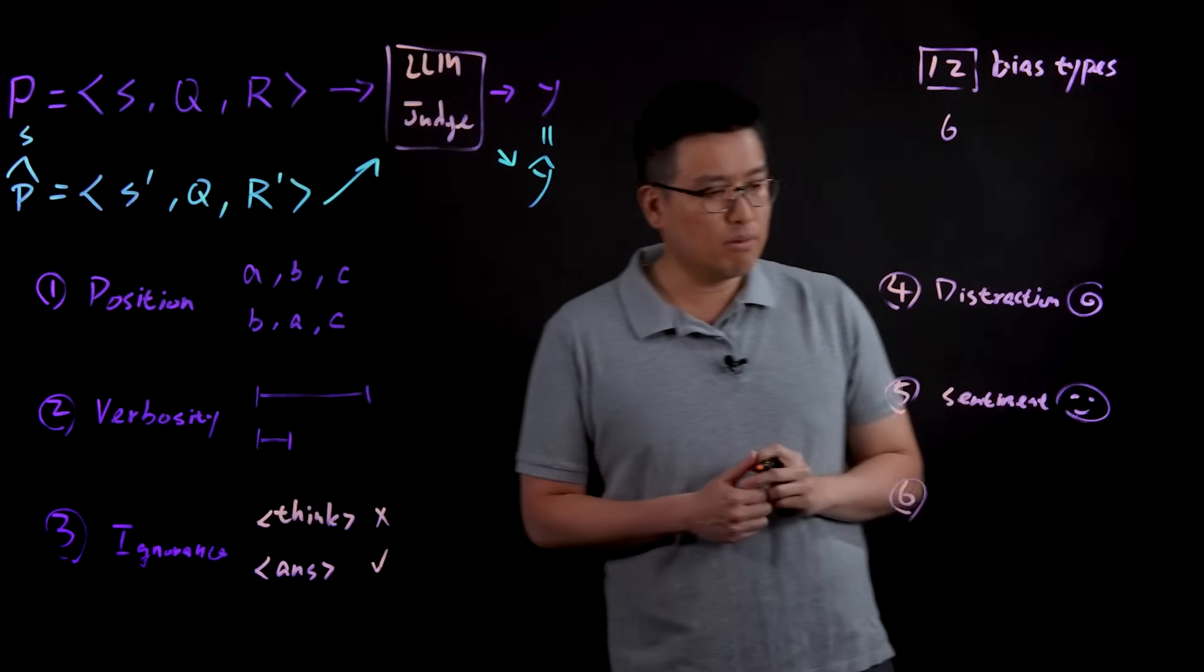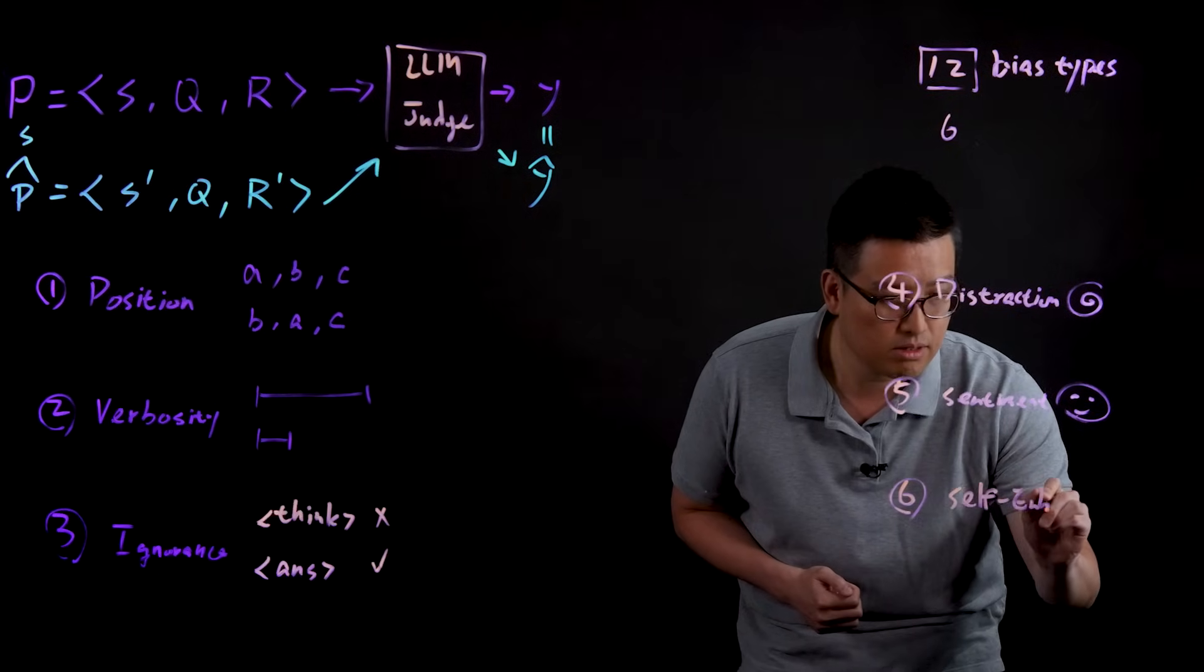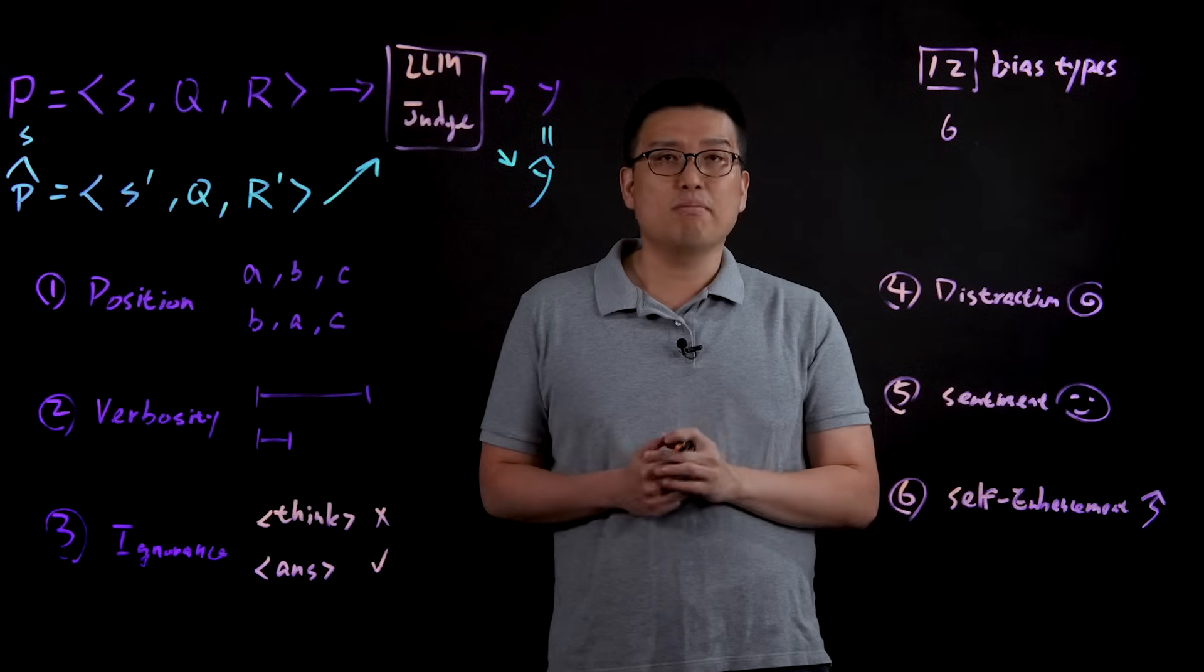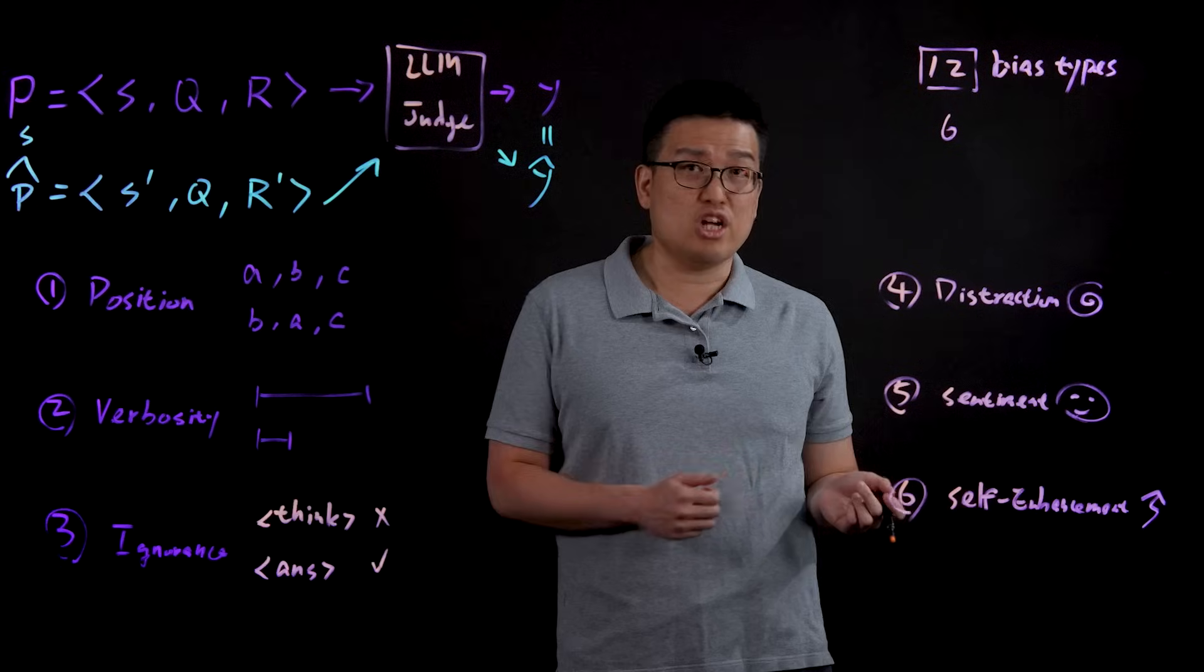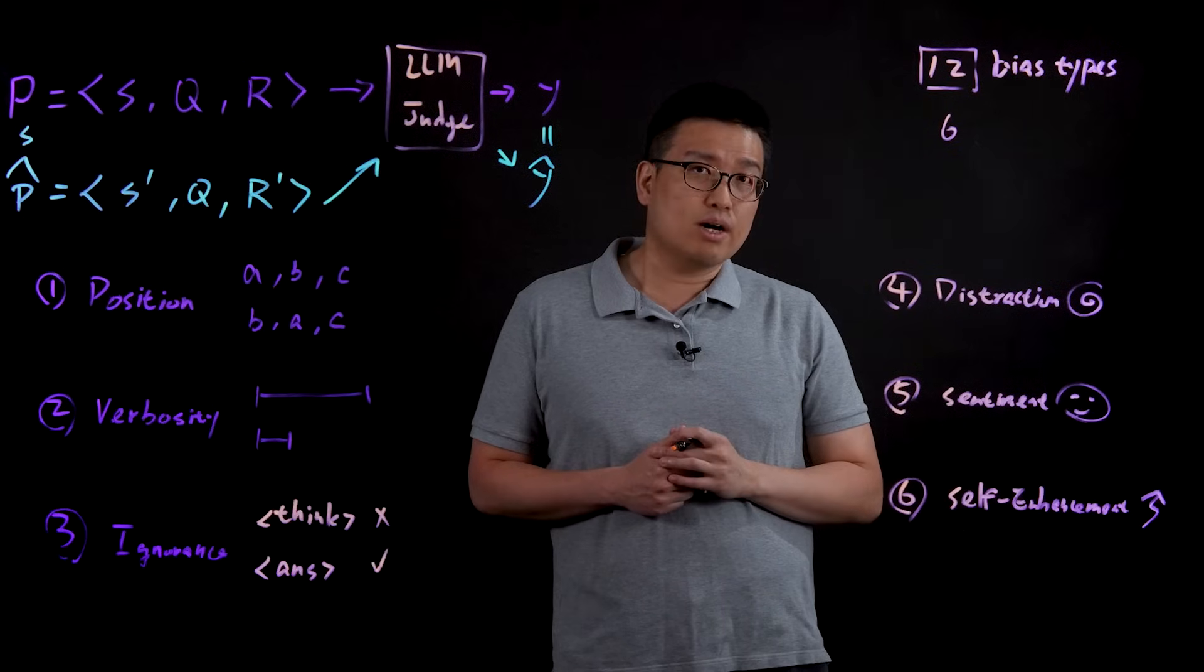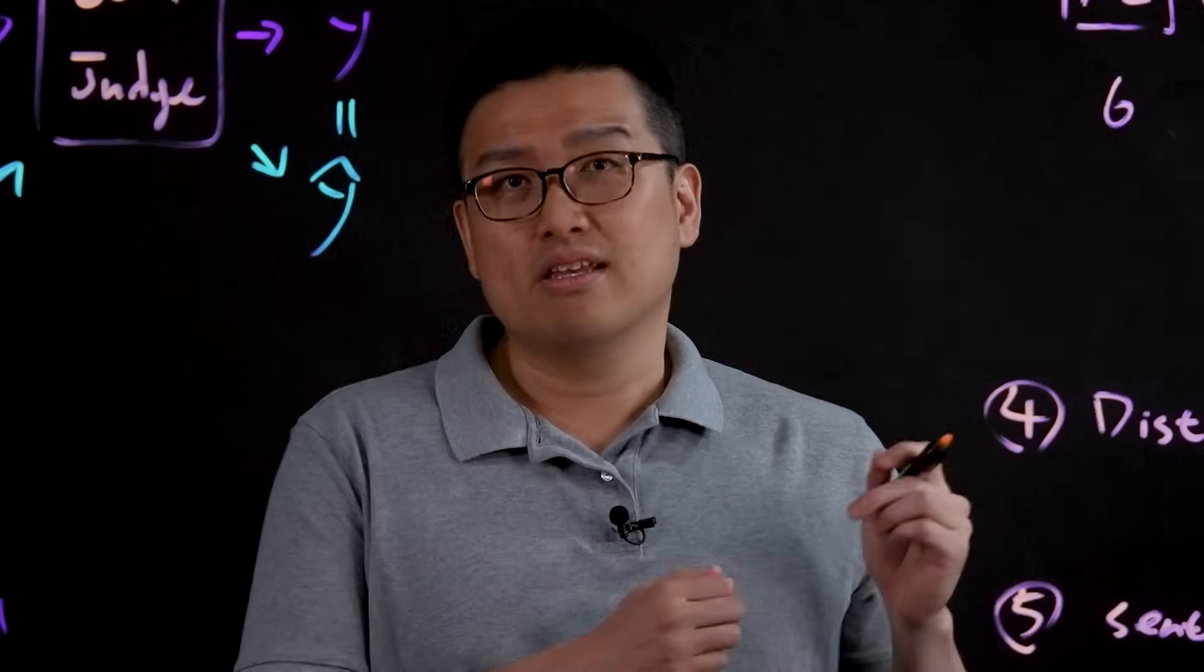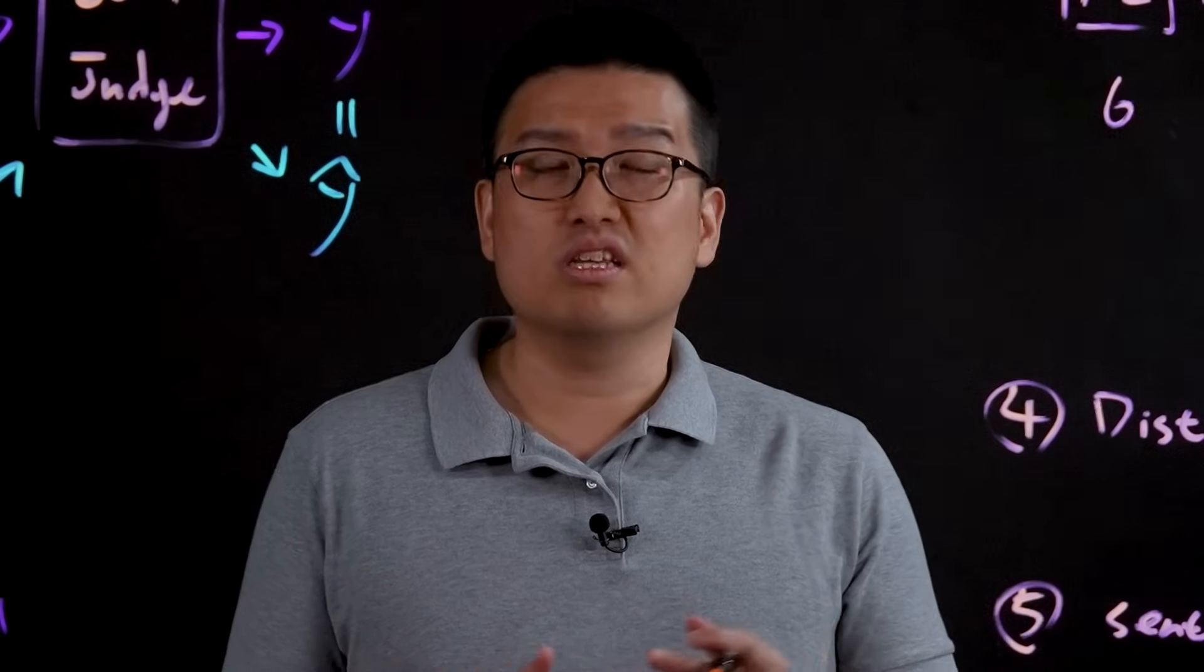Finally, probably the most interesting finding that we had was the phenomenon that we called self-enhancement. So in this case, we asked the LLM to generate a response, and then we also use the same LLM to act as a judge to evaluate the quality of the response. And for many of the language models that we tested, we found that there is a strong preference for the language model as a judge to select the response generated by the same language model, which shows a very strong self-bias inherited in their judgment function.